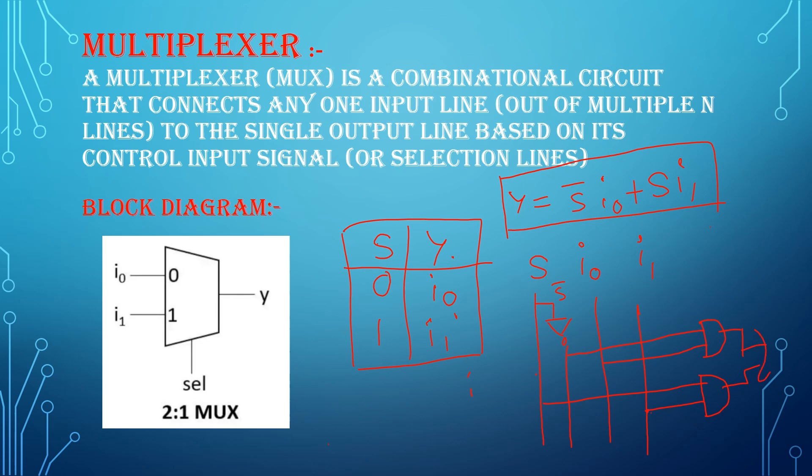And these two AND gates I am connecting to the OR gate. And this is the hardware circuit. Yeah, this is about a brief explanation of 2x1 multiplexer.